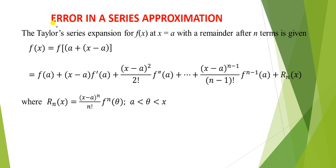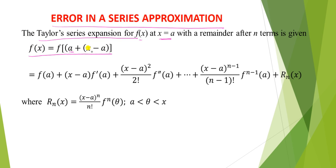For errors in a series approximation, the Taylor series expansion for f(x) at x equals a with a remainder after n terms is given by f(x) equals f(a) plus (x−a) f'(a) plus (x−a)² upon 2 factorial times f''(a), plus up to (x−a)^(n−1) upon (n−1) factorial times the (n−1)th derivative of f at a, plus Rn(x). Here Rn(x) represents the remaining terms, defined as Rn(x) equals (x−a)^n upon n factorial times the nth derivative of f at x equals theta, where theta lies between a and x.